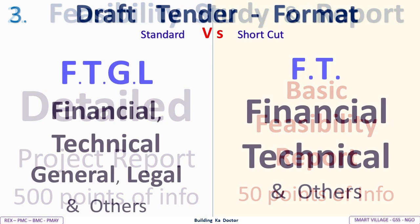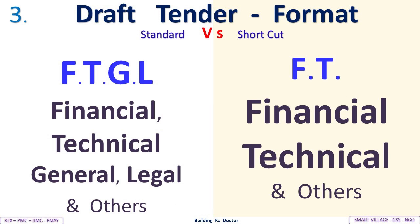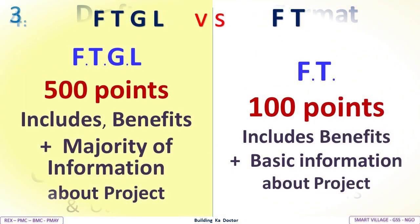Third, draft tender format: Standard uses FTGL — Financial, Technical, General, and Legal — and others; the shortcut covers only FT (Financial and Technical). Fourth, the FTGL 500 points include benefits plus majority of information about project profit, versus the shortcut's basic information about the project.